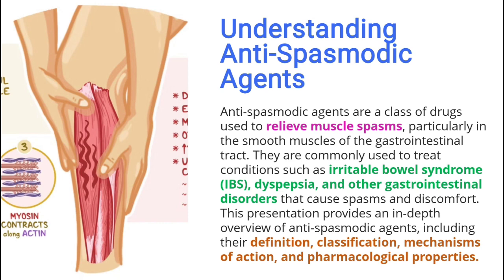First, let's define what antispasmodic drugs are. These drugs act on various types of muscles including smooth muscles found in organs like the intestine, bladder, and uterus, as well as skeletal muscles. Antispasmodic drugs can be used for IBS, dyspepsia, or other gastrointestinal disorders. In this video, we'll understand the classification, mechanism of action, and pharmacological properties of antispasmodic agents. Please watch this video till the end, and if you like it, hit the like button and subscribe to our channel for more medical content.